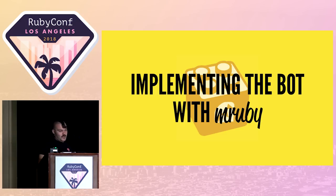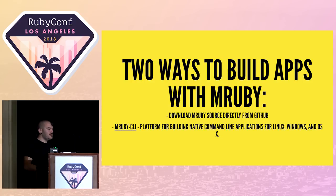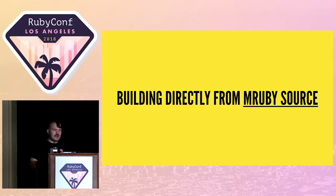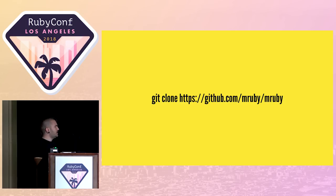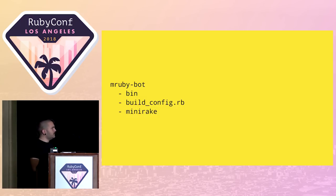Implementing the bot with MRuby — this one was interesting. There are two ways to build apps with MRuby: download the MRuby source directly from GitHub, or use the MRuby CLI, a platform for building native command line applications for Linux, macOS, and Windows. I decided I didn't want another level of abstraction, so I built it from the MRuby source. Once I cloned the repo, I got an empty bin folder, a build config file (which acts like a Gemfile or gemspec), and a mini-rake file. Once you invoke that mini-rake file, the bin folder gets an MRuby file and a MIRB file — it creates runtimes based on the build config and your operating system.